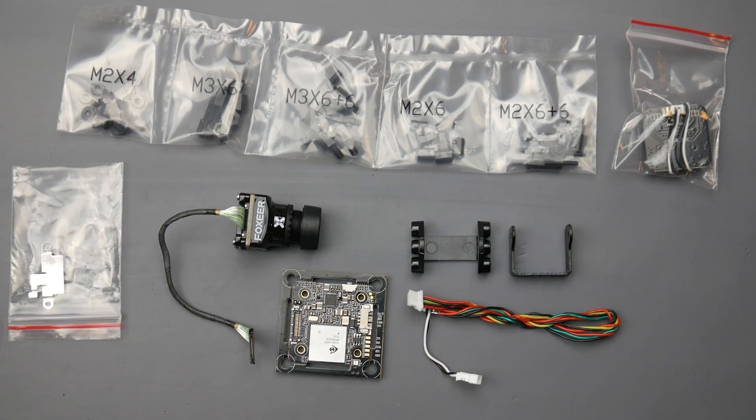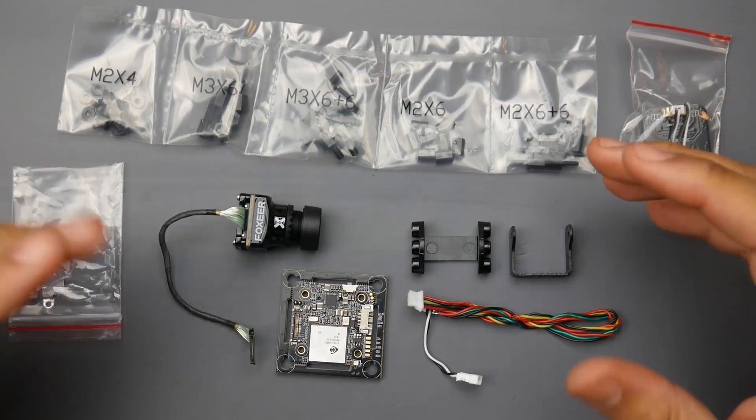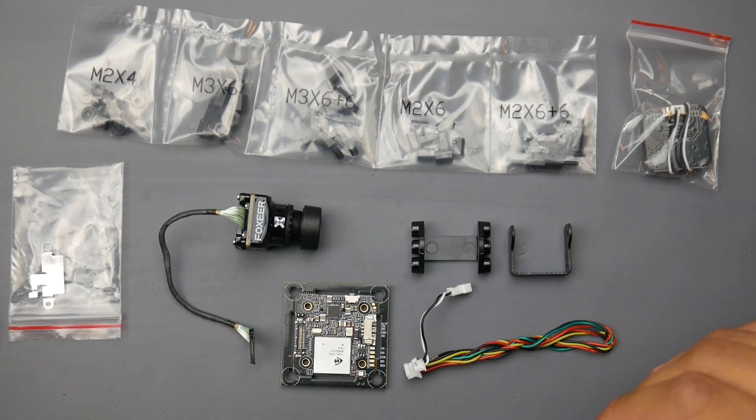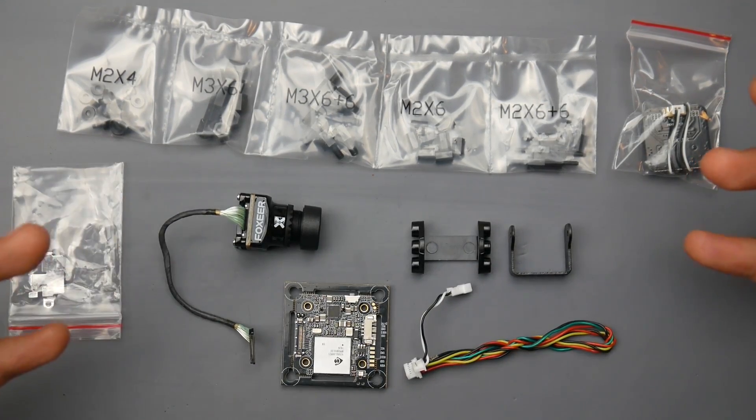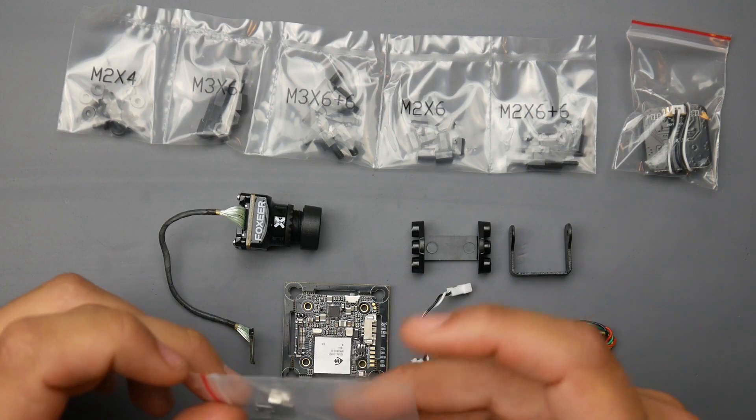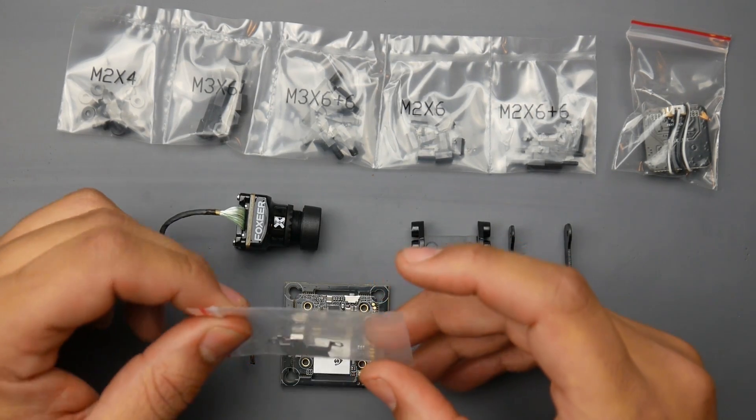Hey what is up guys and welcome back. Today we're going to be testing the Foxeer Mix for latency and setting it up. This thing can record 1080p 60 frames a second, and this is everything that it comes with. We're going to be testing it for latency, and if you're looking for the FPV footage, this will not be the video for you.